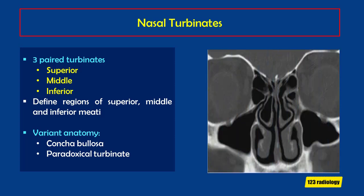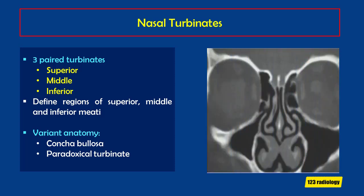We can see some variant anatomy here. One of the most common variants is aeration of the middle turbinate, so-called concha bullosa. We also see another variant called paradoxical curvature of the turbinate, seen as an outward curvature as compared to the normal inward curvature.